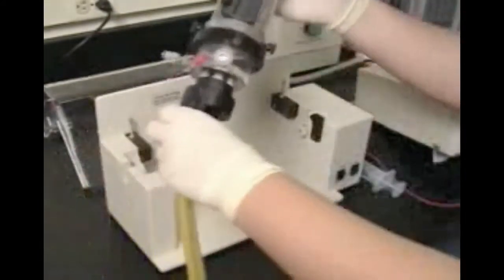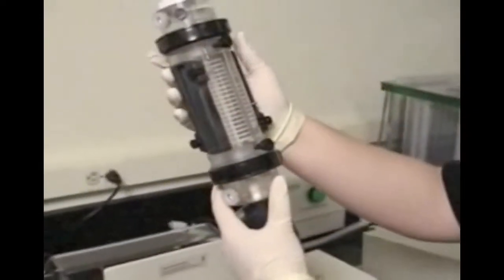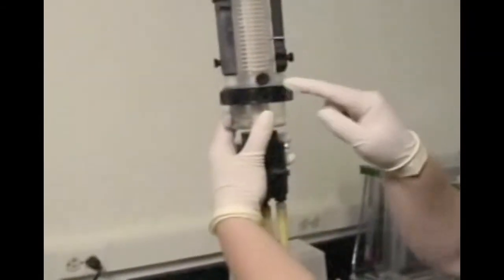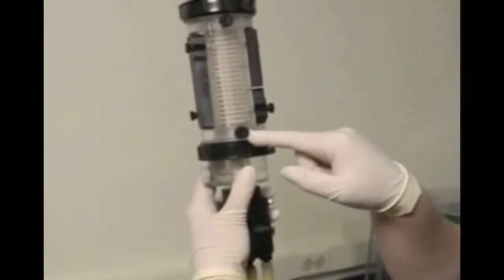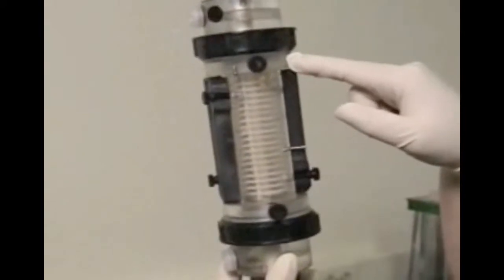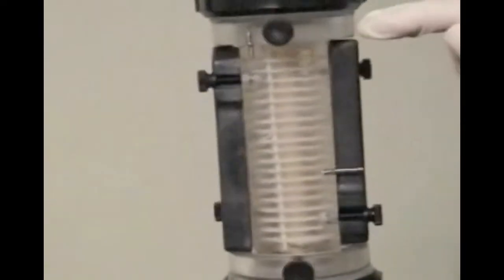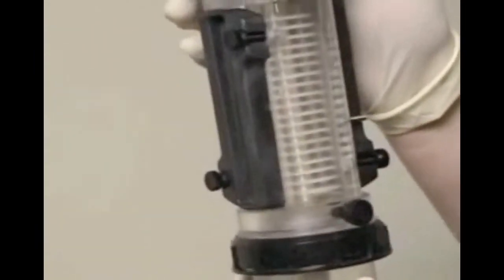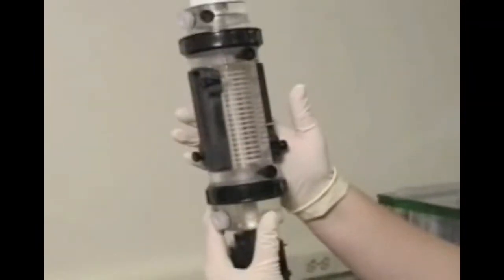During sample loading, air bubbles can become trapped in the six holes that connect the electrode chamber with the focusing chamber. These bubbles tend to become trapped within this region right here. Air bubbles cause a discontinuity in the electrical field and fluctuations in the voltage. Some power supplies, such as the PowerPak 3000, may shut off in response to air bubbles within the electrical circuit.